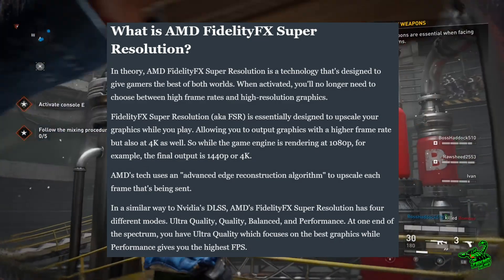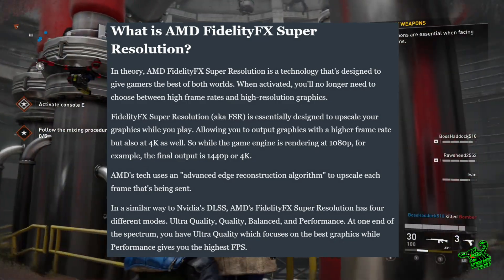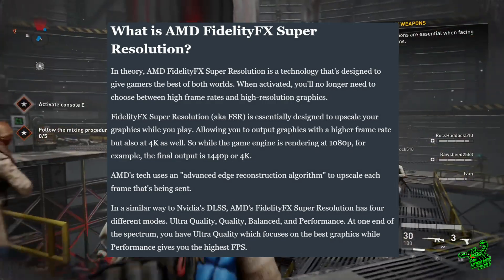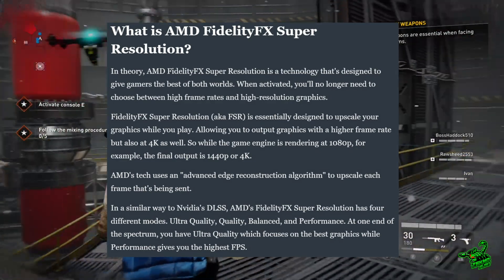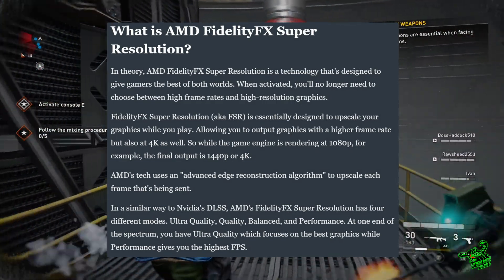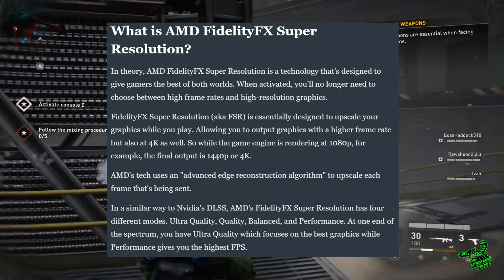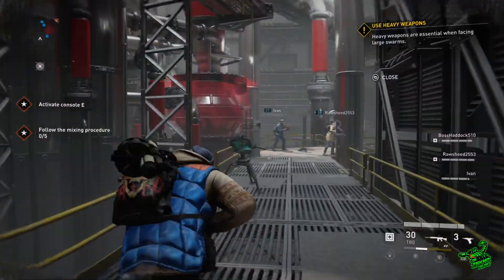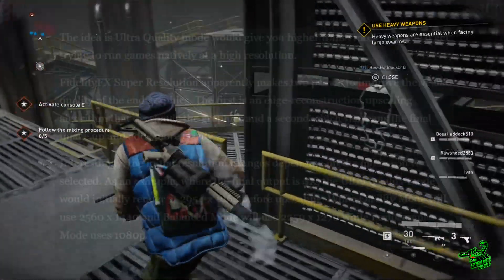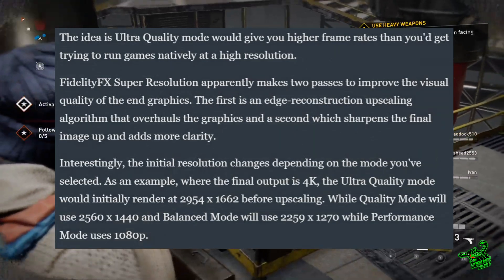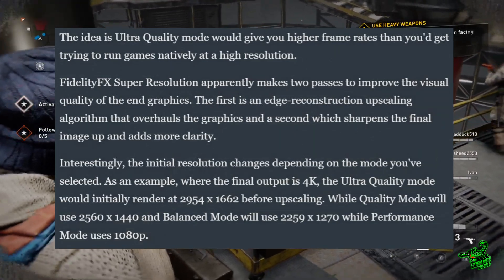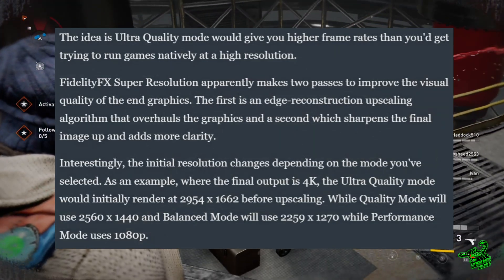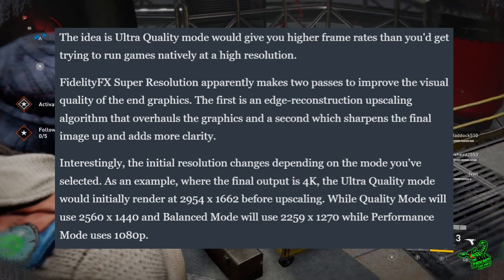AMD's FidelityFX FSR has four different modes: Ultra Quality, Quality, Balanced, and Performance. At one end of the spectrum you have Ultra Quality, which focuses on the best graphics, while Performance gives you the highest frame rate. The idea is that Ultra Quality mode will still give you higher frame rates than running games natively at a higher resolution.